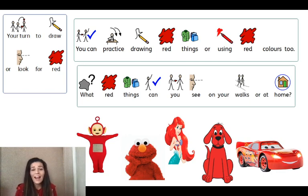So now looking at red objects is finished. Looking at Lily drawing red objects has finished. Now it's your turn. You can practice drawing red things or use red pens or pencils. Maybe you have paint.